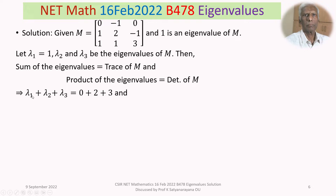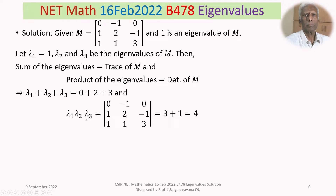The sum lambda1 + lambda2 + lambda3 equals the trace, which is the sum of diagonal entries: 0 + 2 + 3 = 5. The product lambda1 × lambda2 × lambda3 equals the determinant of M. Expanding the determinant by the first row gives 3 + 1 = 4. Since lambda1 = 1, we get lambda2 + lambda3 = 4 and lambda2 × lambda3 = 4.